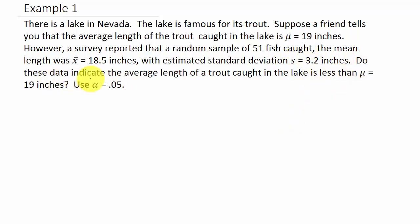Do these data indicate the average length of a trout caught in the lake is less than the population mean mu equals 19 inches? Use alpha equals 0.05. Our null hypothesis is mu equals 19 inches. That's the claim they're making that the average length is 19 inches. Our alternate hypothesis based on these 51 fish caught, we're saying the mean is less than 19. This is a left-tailed test.